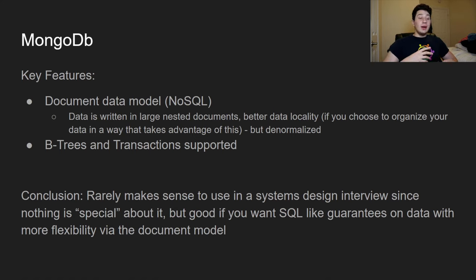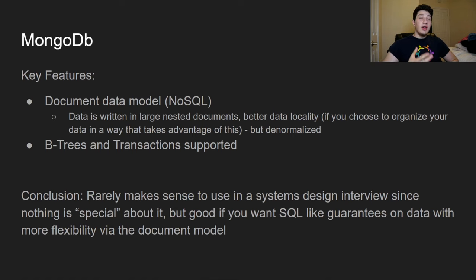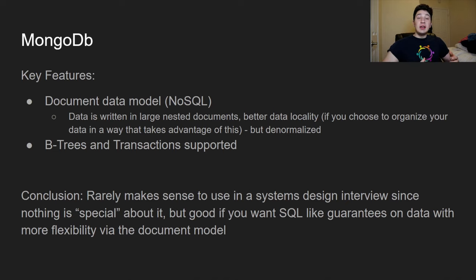With SQL you might have a table of books and a table of authors on different computers, joined by ID. In a document data model, all of a given author's book documents would be stored within the author document, giving great data locality when updating them together. The downside is denormalized data — if multiple documents share a piece of information and one gets updated but the other doesn't, those documents fall out of sync. MongoDB does use transactions and B-trees, so performance is similar to SQL, just with more flexibility in the document model.